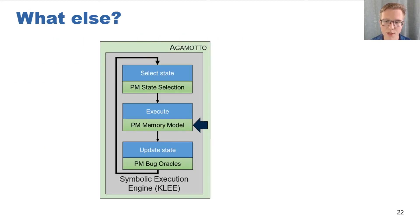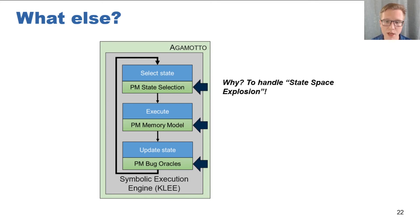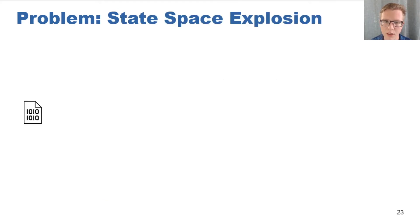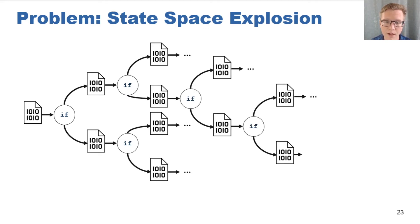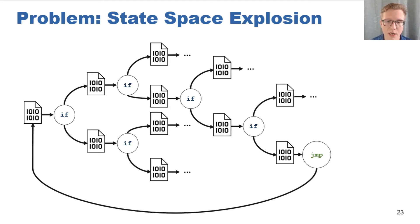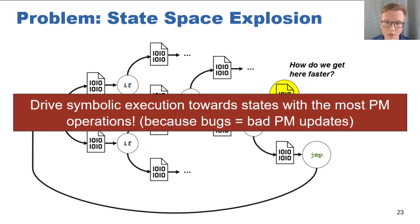The persistent memory model and bug oracles cover everything Agamotto needs to find persistent memory bugs. However, we also want to build a persistent memory state selection method to mitigate one major issue of symbolic execution: state-space explosion. For real programs, there are many repeated conditional branches which can continually fork the state. Furthermore, loops exacerbate this issue, as the process of forking can be repeated many times, leading to an exponential explosion of states. However, we are only interested in exploring states which have persistent memory bugs. So we ask ourselves: can we accelerate bug finding by driving exploration towards states which are likely to contain persistency bugs? Our insight is to drive symbolic execution towards states with more persistent memory modifying instructions, as persistent memory bugs originate from bad modifications to persistent memory.